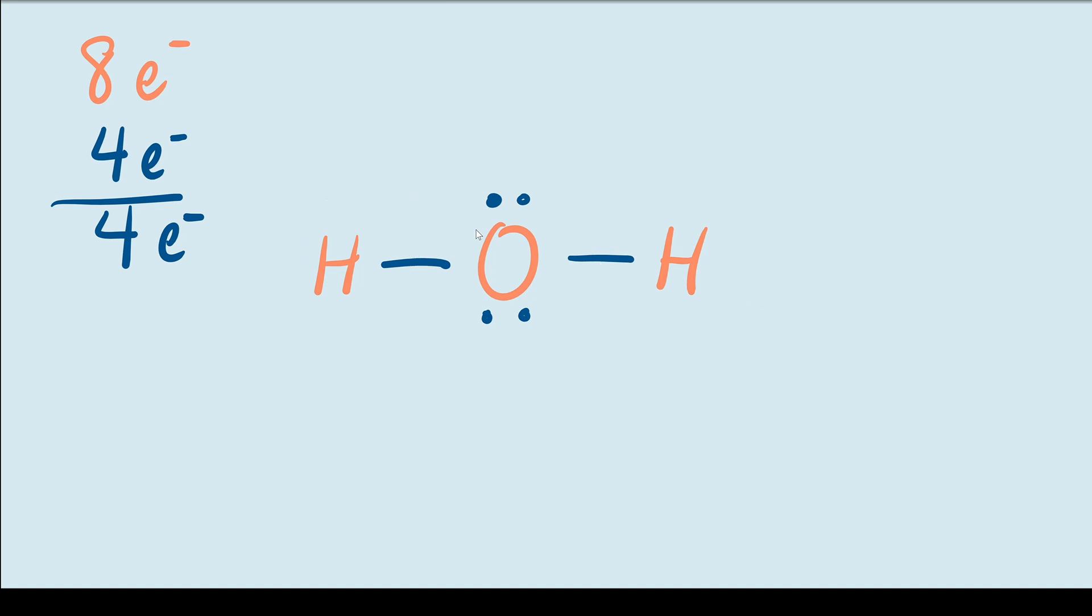However, looking at the oxygen atom we can see that it has its octet filled because it has 2 lone electron pairs and 2 single bonds, which accounts for the 8 electrons that it needs in its octet. That means this is the Lewis dot structure for H2O.